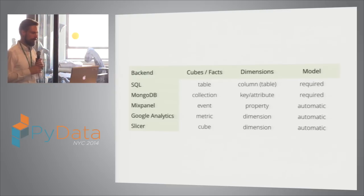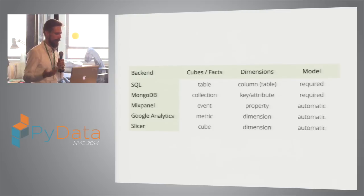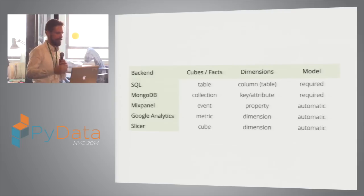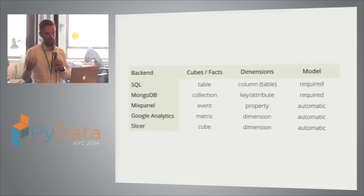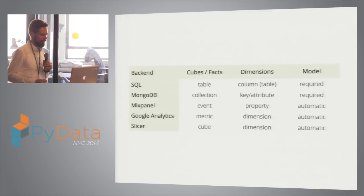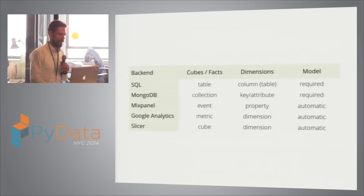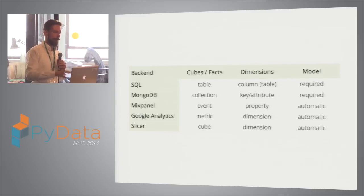Here's an example of mapping of the concepts. In Cubes, the fact is usually mapped to a table, a dimension approximately to a column — might be multiple columns. You need to define the model because you don't have enough metadata in a relational database to understand it automatically, though you can try to derive it, it's not always sufficient. In MongoDB, the Cube is usually a collection. And here you can also see Google Analytics, where we map the metric to a cube — in our case, one cube per metric, an illusion of a cube per metric with dimensions.